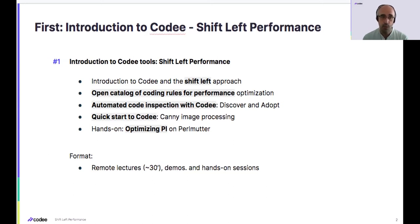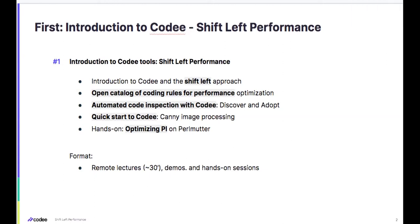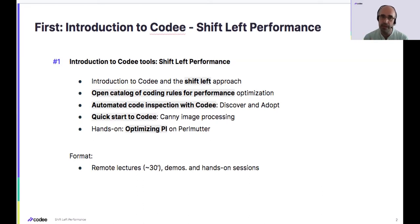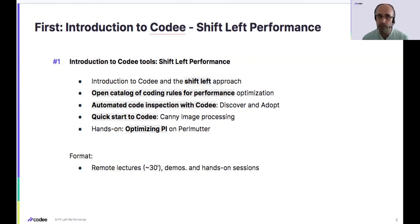We will be splitting the process into two major stages: a stage called Discover and a stage called Adopt. Discover is about producing the performance optimization report with a listing of all the insights that CodeE can produce for your code. The iterative process of the developer starts in the Adopt phase, where you guide the performance optimization process by identifying the hotspots — the parts of the code that are most time-consuming — and request from CodeE all the insights and coding rules that apply to those hotspots. Adopt is about understanding and implementing the best coding practices available in the catalog to make your code run faster.